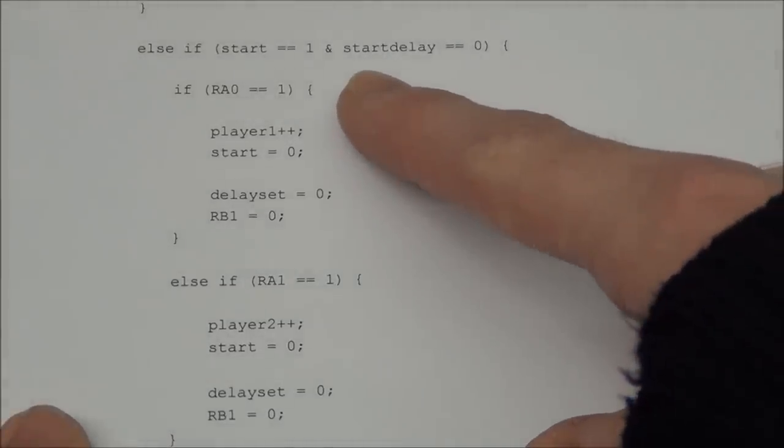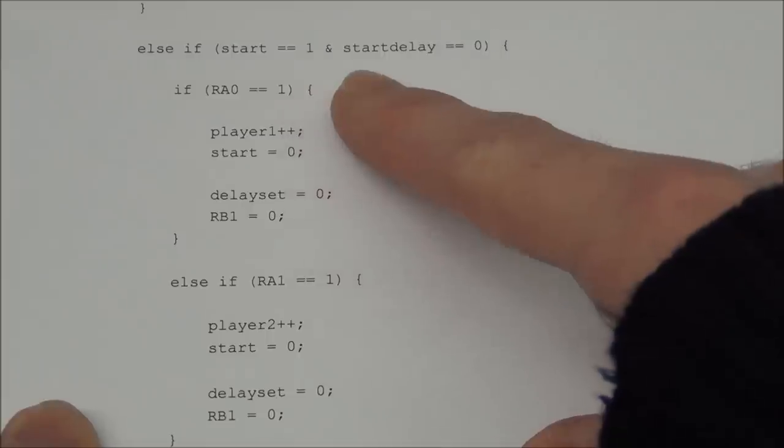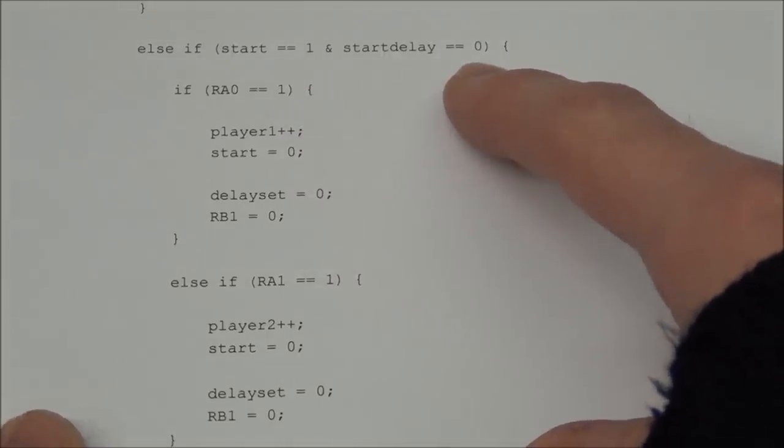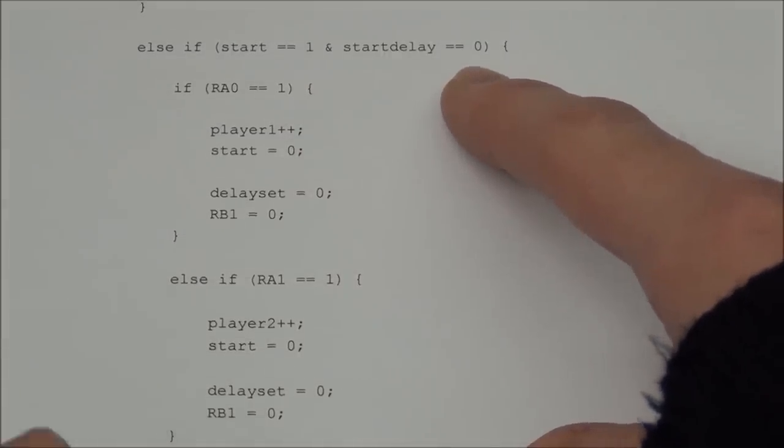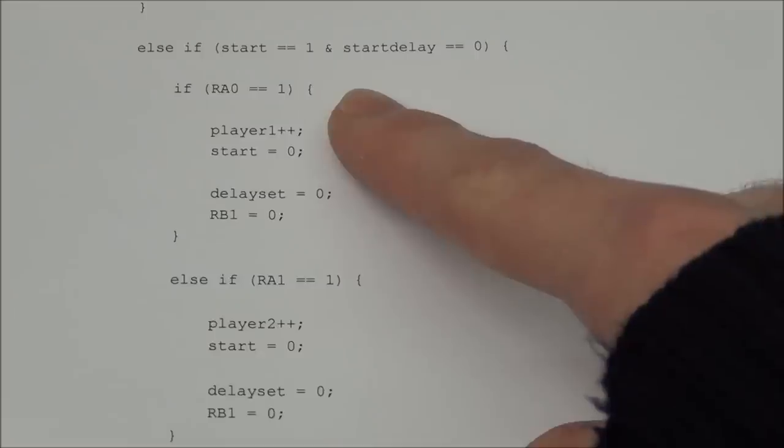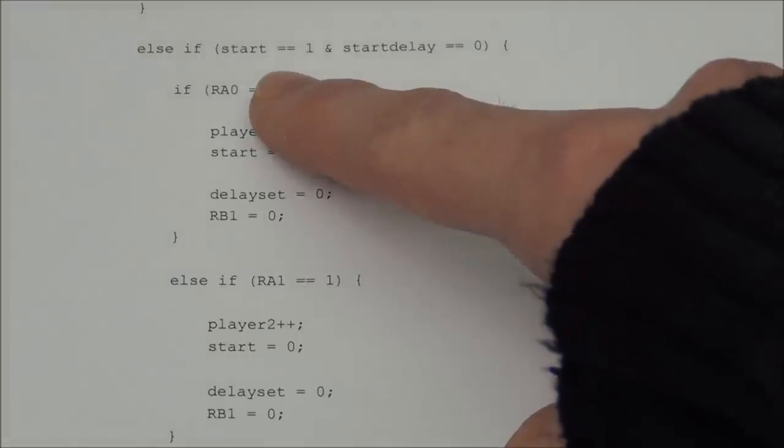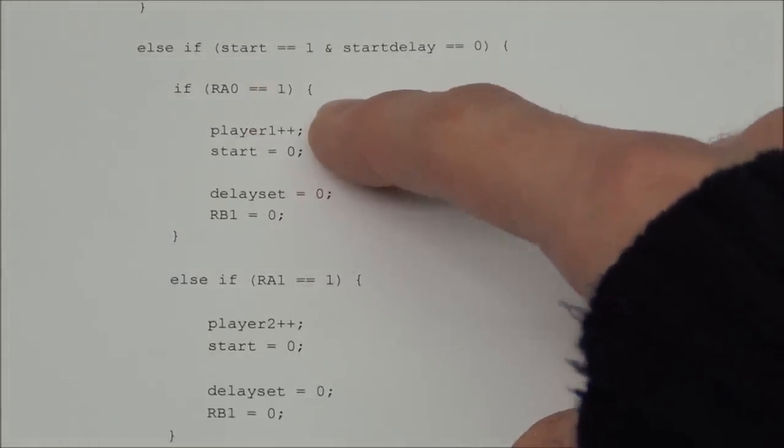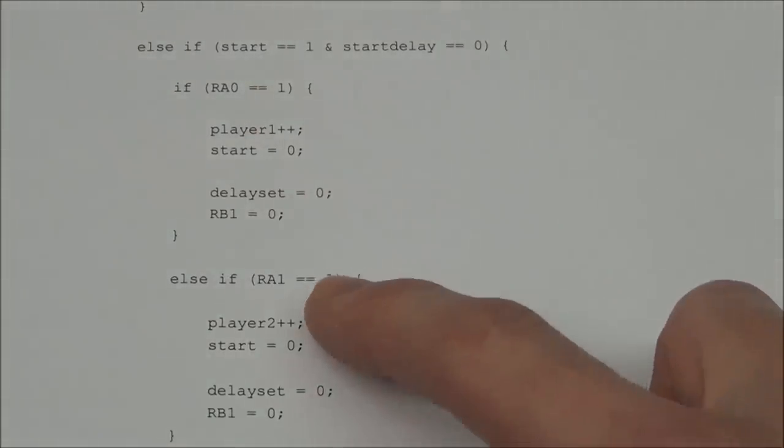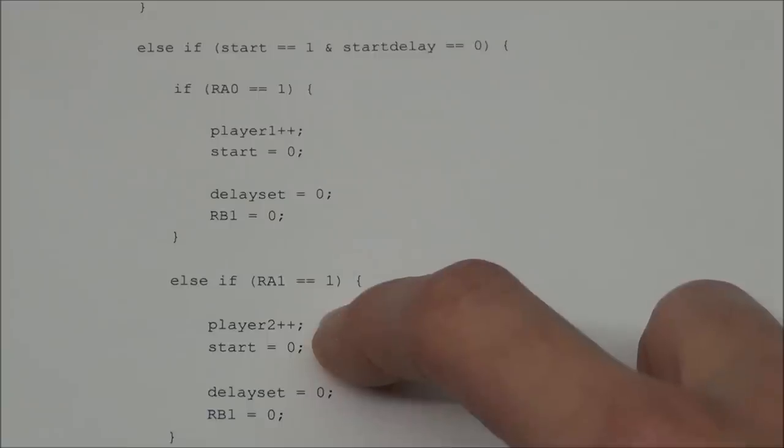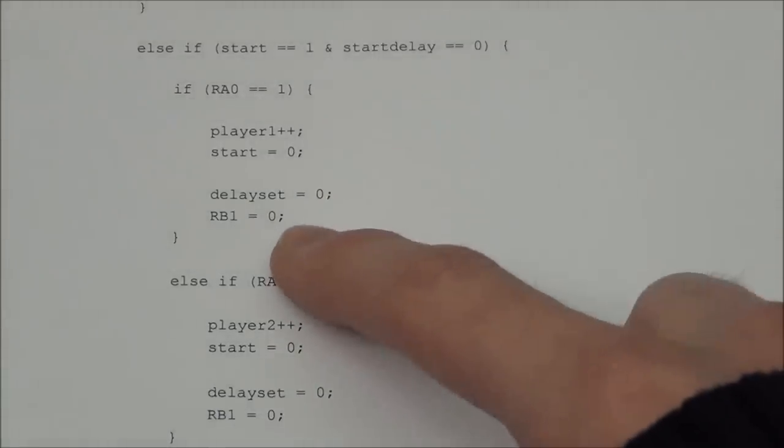And down here we have the opposite situation. If the start delay equals zero, that means the LED must have lit up. And if you press the button now it is a valid point. So if player 1 presses the button, player 1 will get a point. And if player 2 presses the button, player 2 will get a point. And the rest is just the same thing.